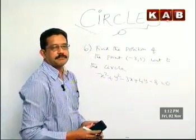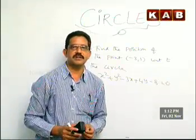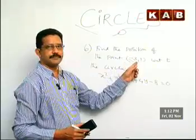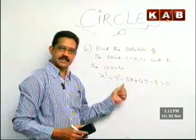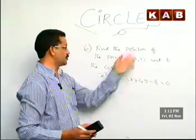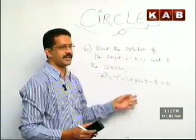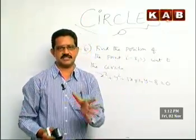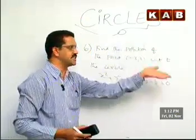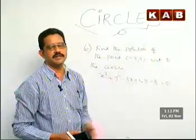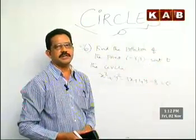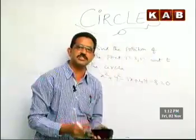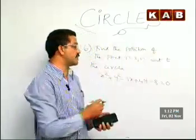This very short answer question concept is: a point is given, a circle is given, and we want to find where the point is. Where the point is — there are three chances. The point may be outside the circle, it may be inside, or it may be on the circle. Out of these three situations, we have to decide where it is.